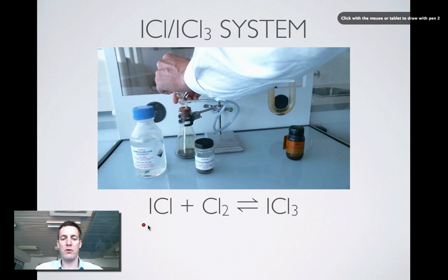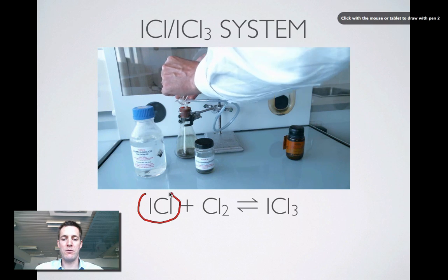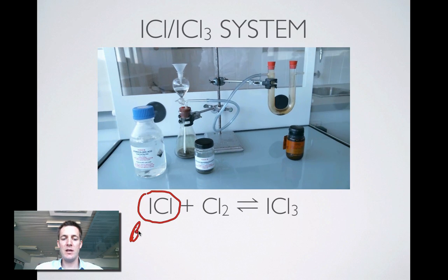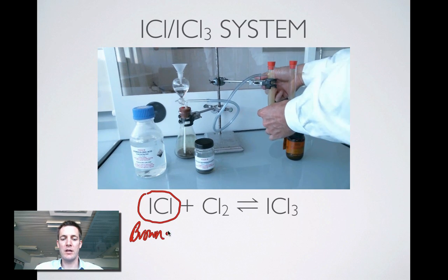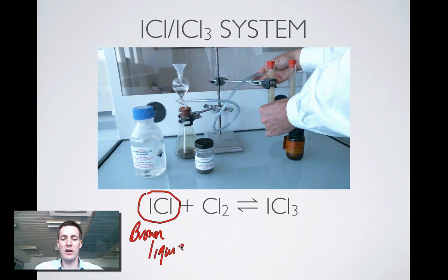So we're going to be forming ICL first of all. How can we tell that we've formed some ICL? Well, it's a brown liquid. So if we see brown liquid in the U-tube on the right, we know we've got ICL there.